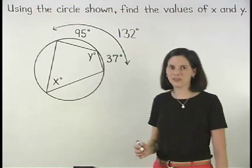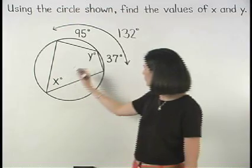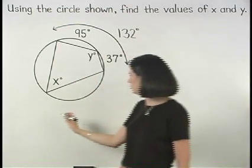So x, which represents the measure of the inscribed angle, equals one half times 132.